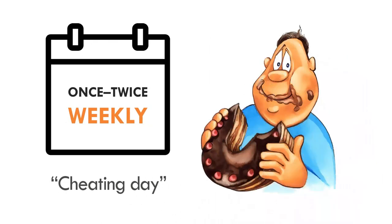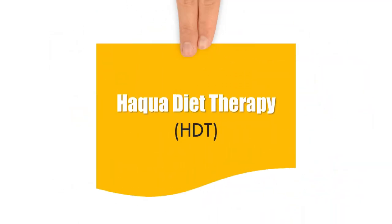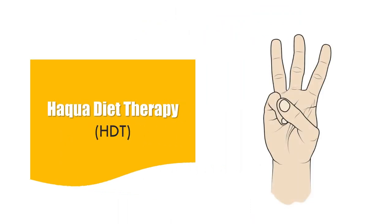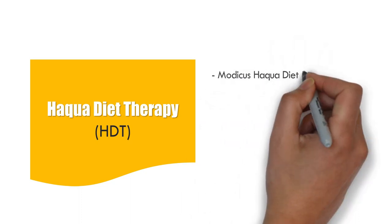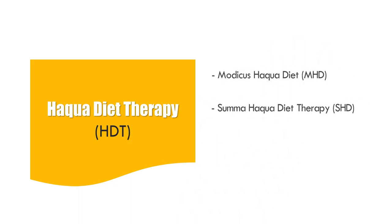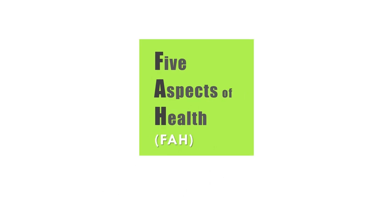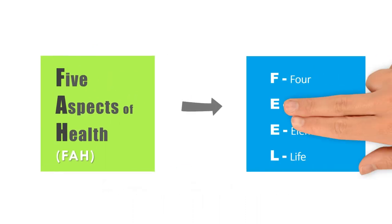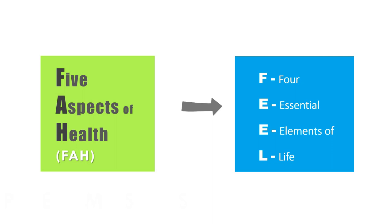This is where you can eat anything your body craves for at no specific limit or amount according to your body's capacity. The Haqua Diet Therapy is split into three different categories for various benefits: Modicus Haqua Diet, Summa Haqua Diet Therapy, and Extremum Haqua Diet Therapy. We coined these basic principles of holistic health: the Five Aspects of Health, namely the physical, emotional, mental, spiritual, and social aspects of health.